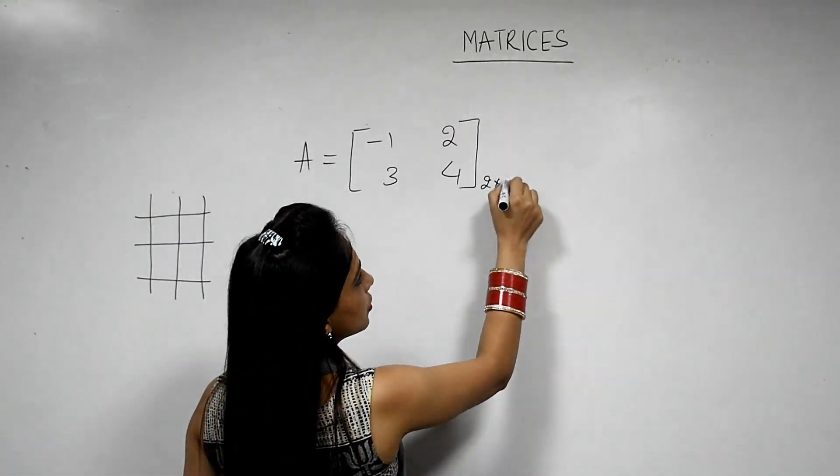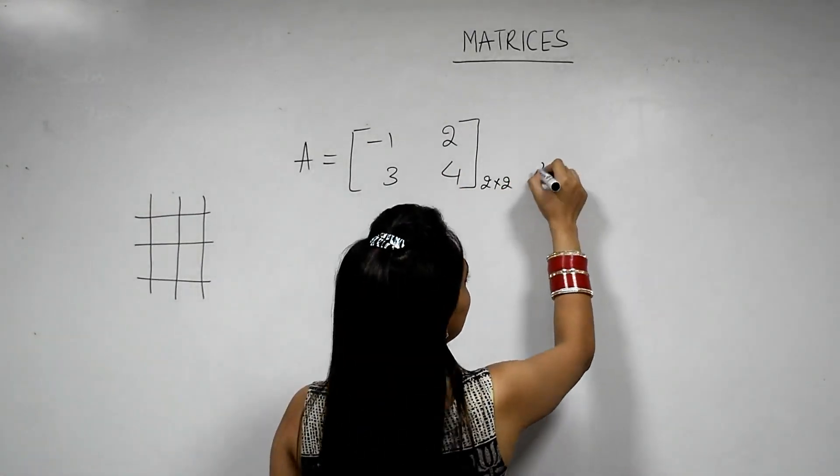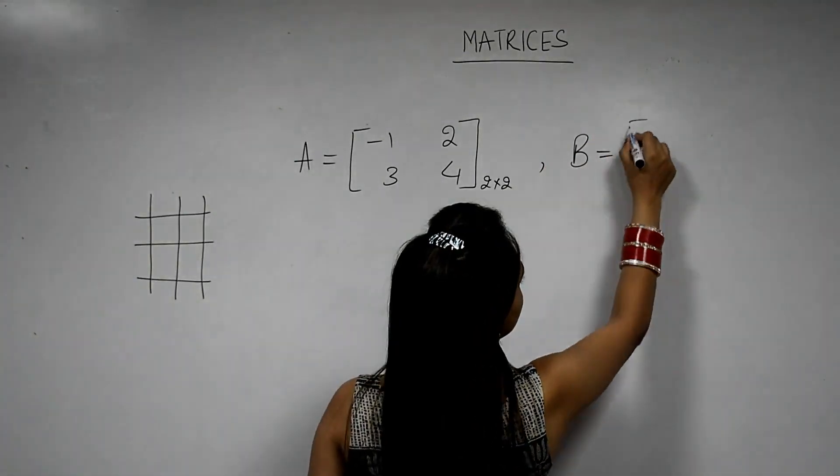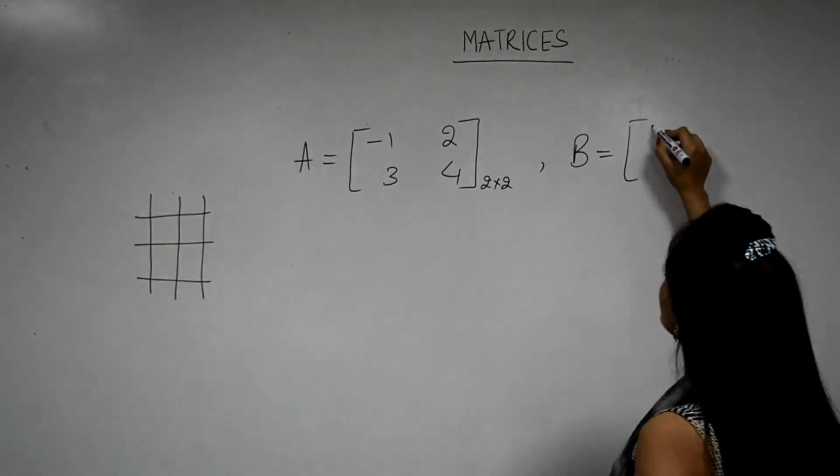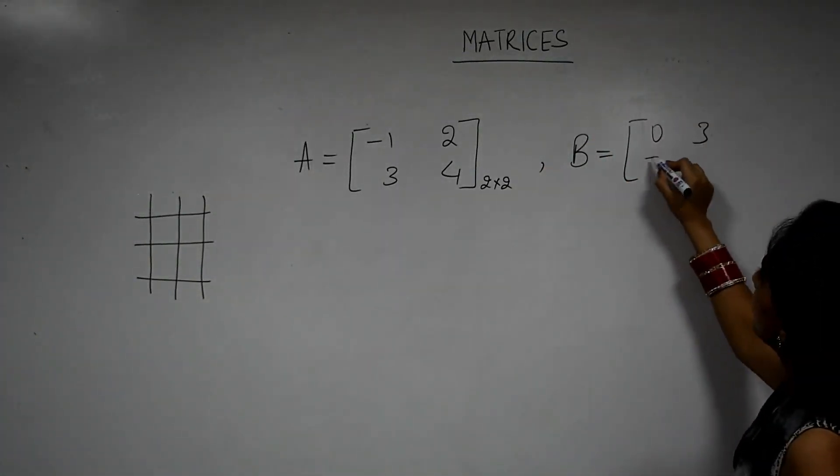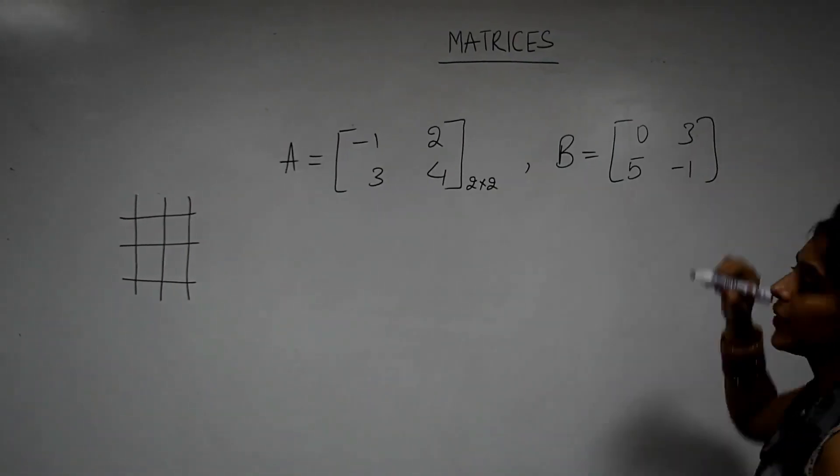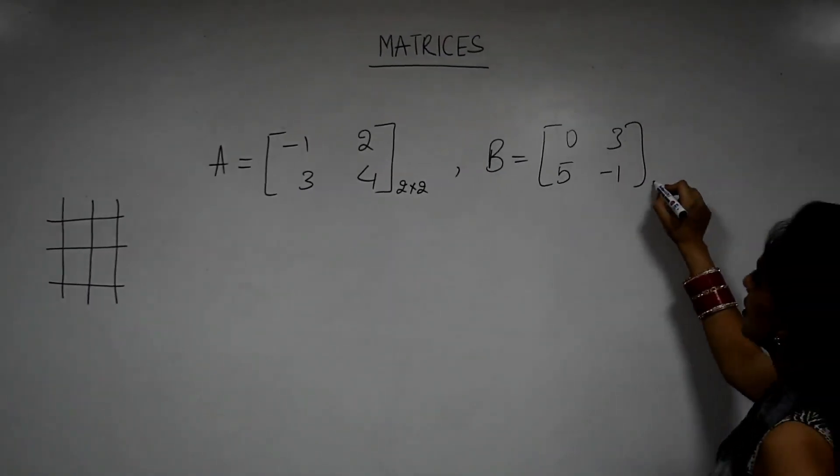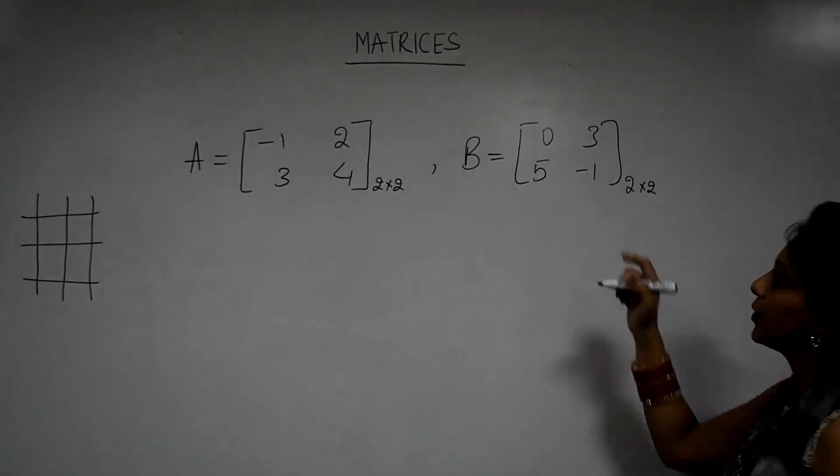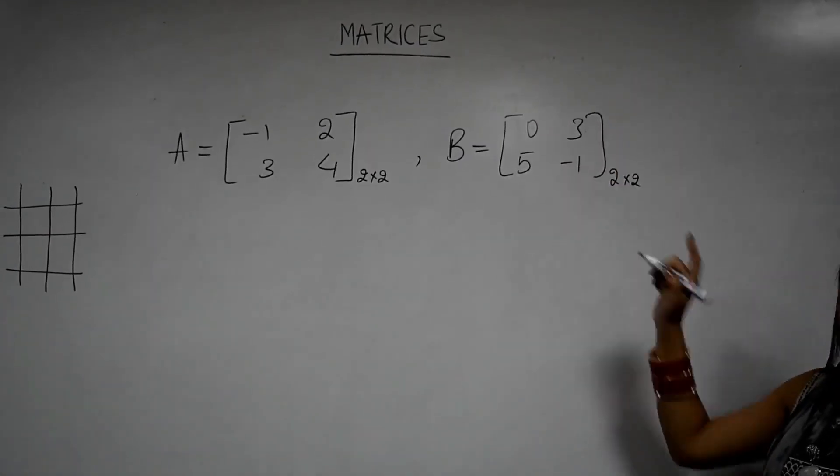Same way, let me take another matrix, say B, which is equal to say 0, 3, 5 and minus 1. Again, order of this matrix is 2 by 2 because 2 rows are there and 2 columns are there.